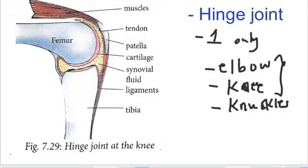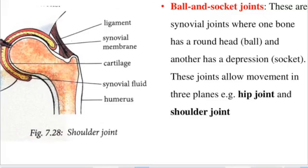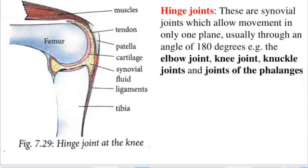To recap: ball and socket joints are synovial joints where one bone has a round head called a ball and another has a depression called a socket; they allow movement in three planes at 360 degrees — examples are the hip and shoulder joints. Hinge joints allow movement in only one plane at 180 degrees — examples are the elbow, knee, knuckles, and phalangeal joints.